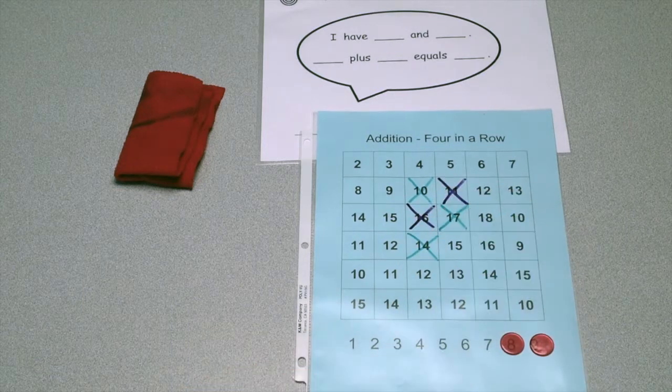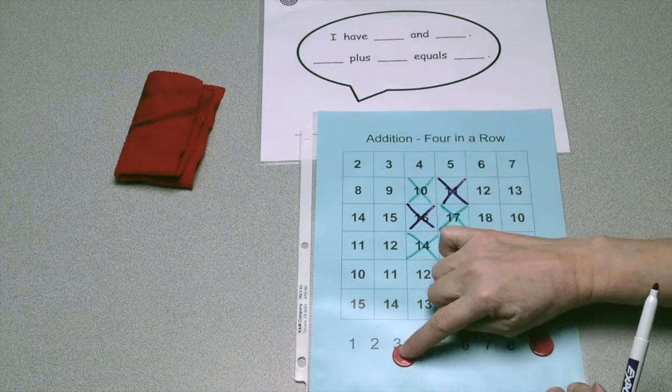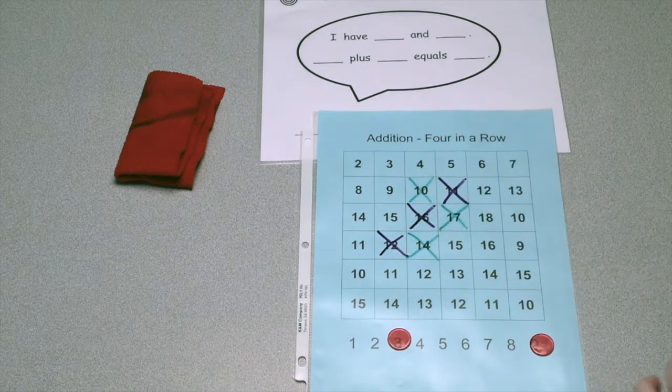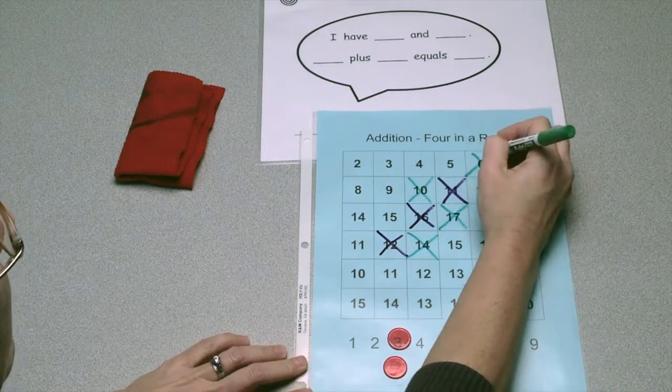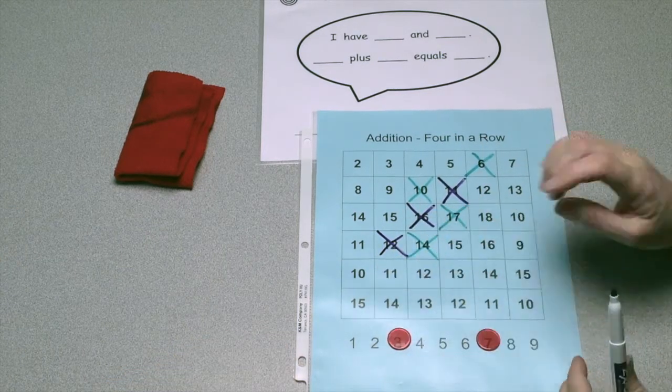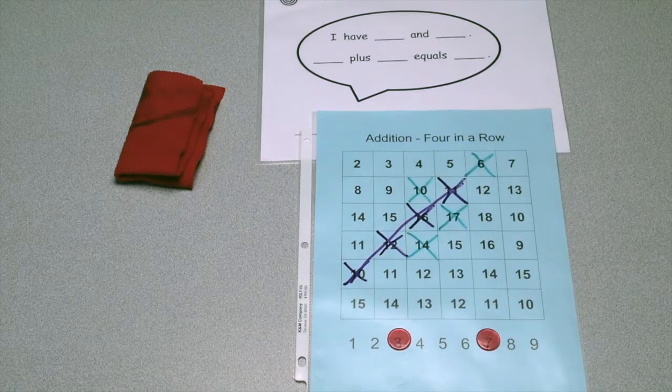Play continues until one of the players makes 4 in a row in any direction: horizontal, vertical, or diagonal. Continue playing until the end of station time. If players complete a game, they can clear the board and begin again.